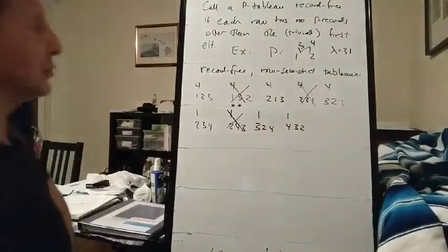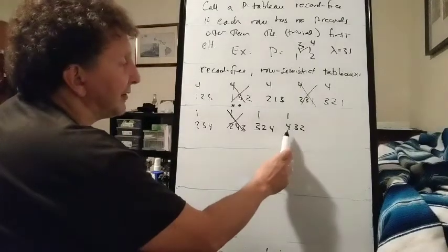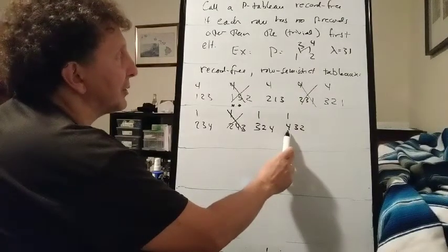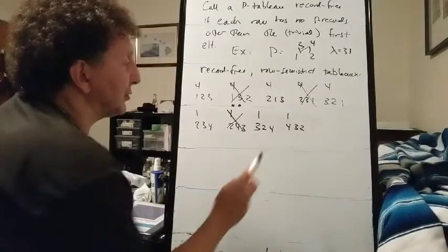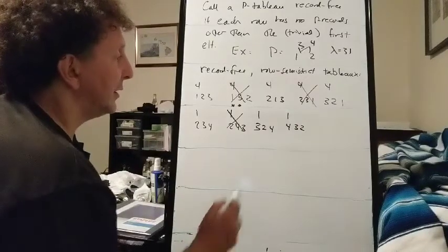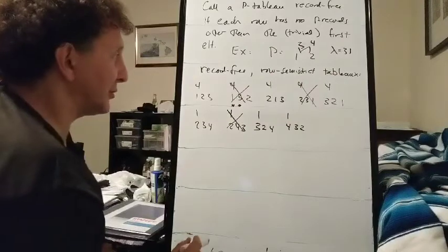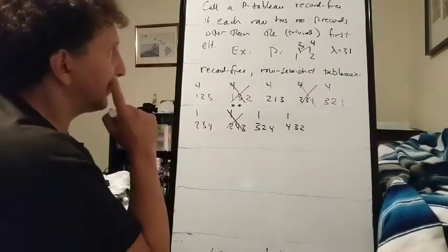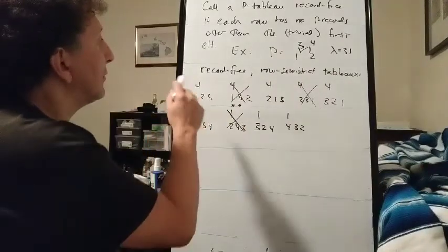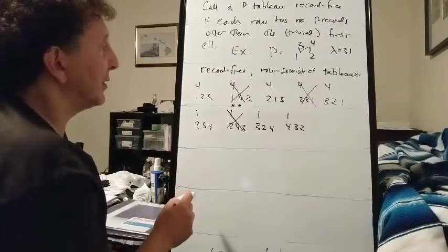4, 3, 2. 4 is definitely the only record. And this is row semi-strict because we're never going strictly down in the poset. And we can't do 4, 2, 3 because that would be going down from 4 to 2, so it wouldn't be row semi-strict. So these are the 6 record-free row semi-strict tableau of shape 3,1.